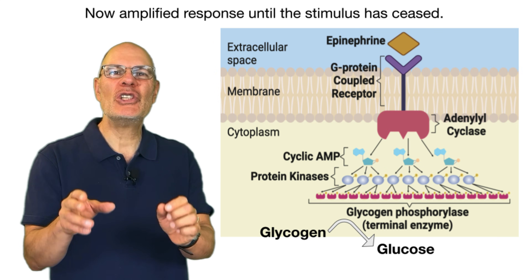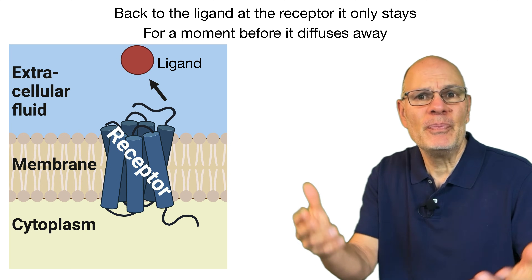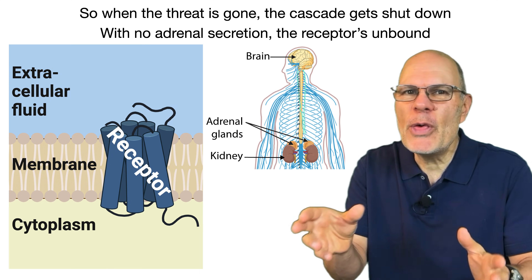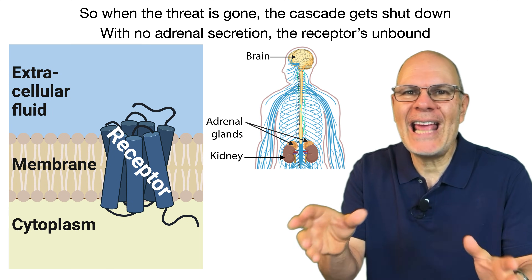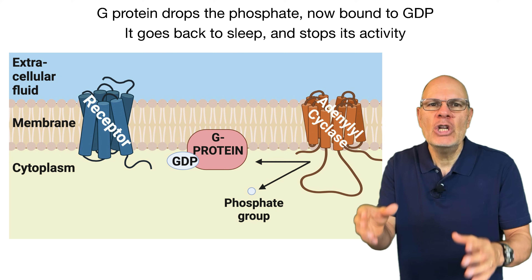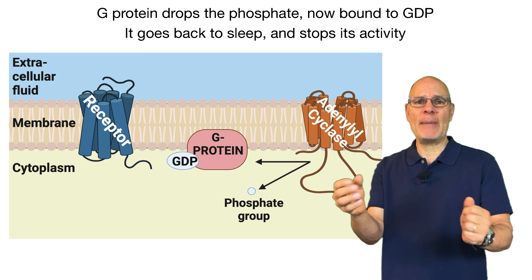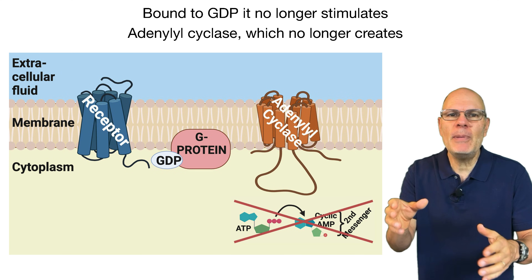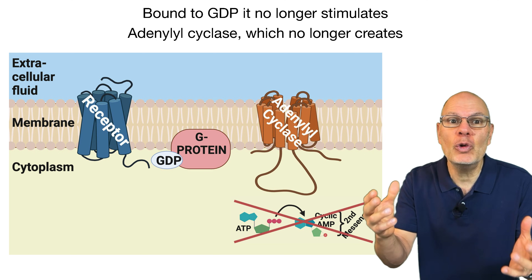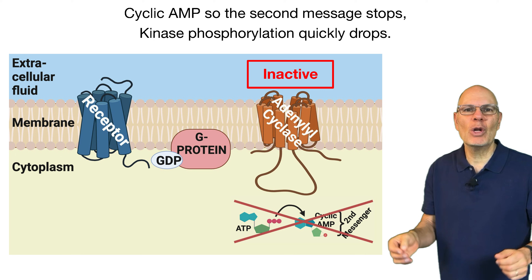Back to the ligand and the receptor — it only stays for a moment before it diffuses away. So when the threat is gone, the cascade gets shut down: with no adrenal secretion, the receptor is unbound. The G-protein drops the phosphate, now bound again to GDP — it goes back to sleep and stops its activity.